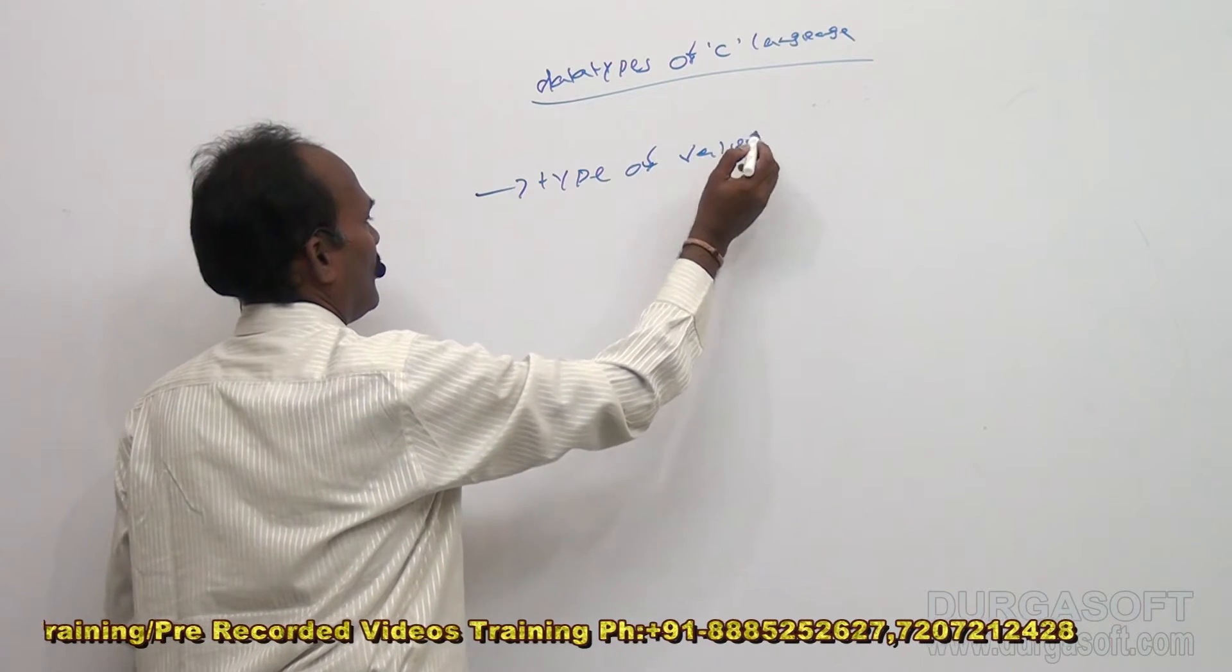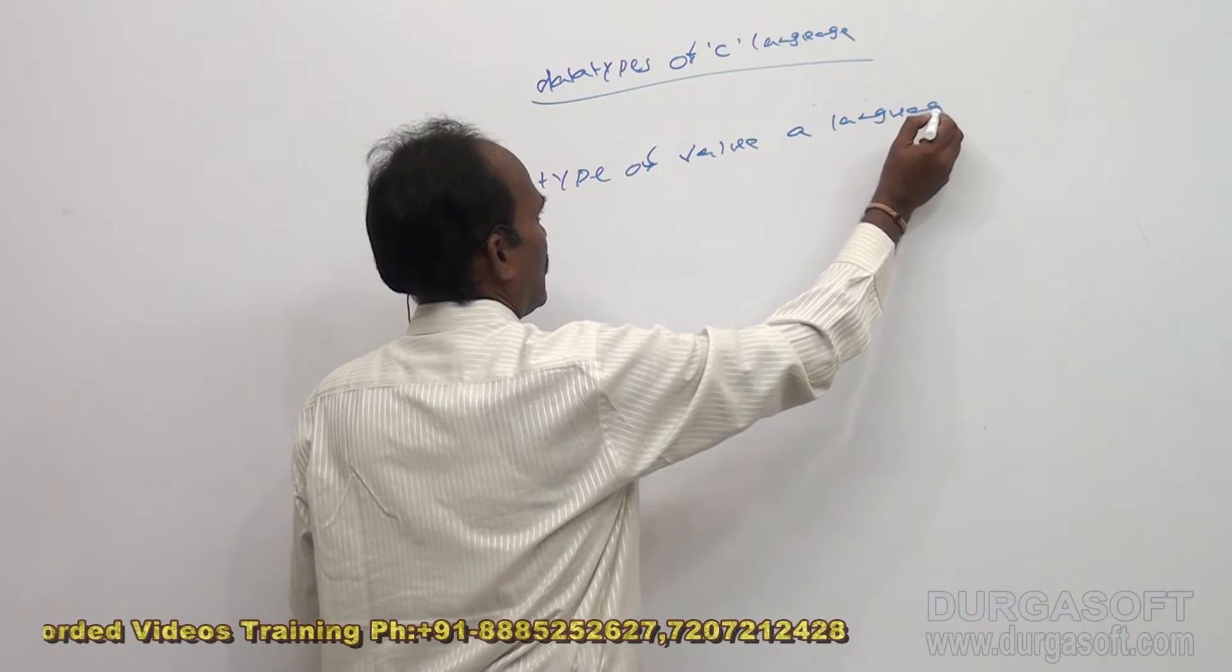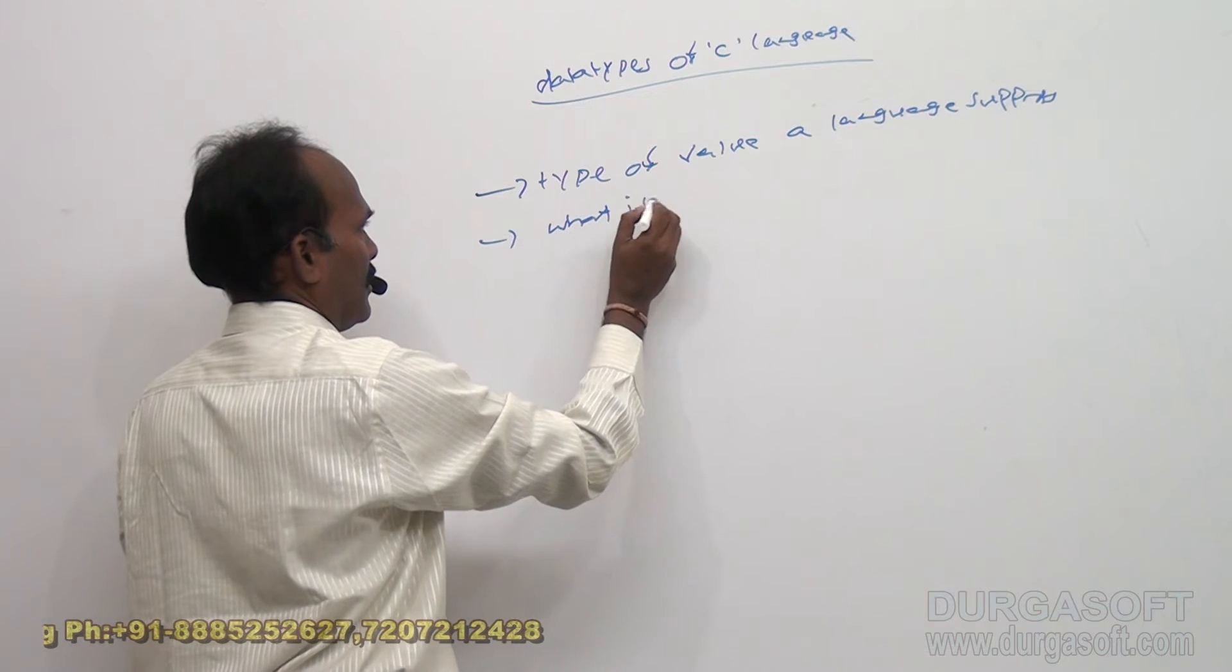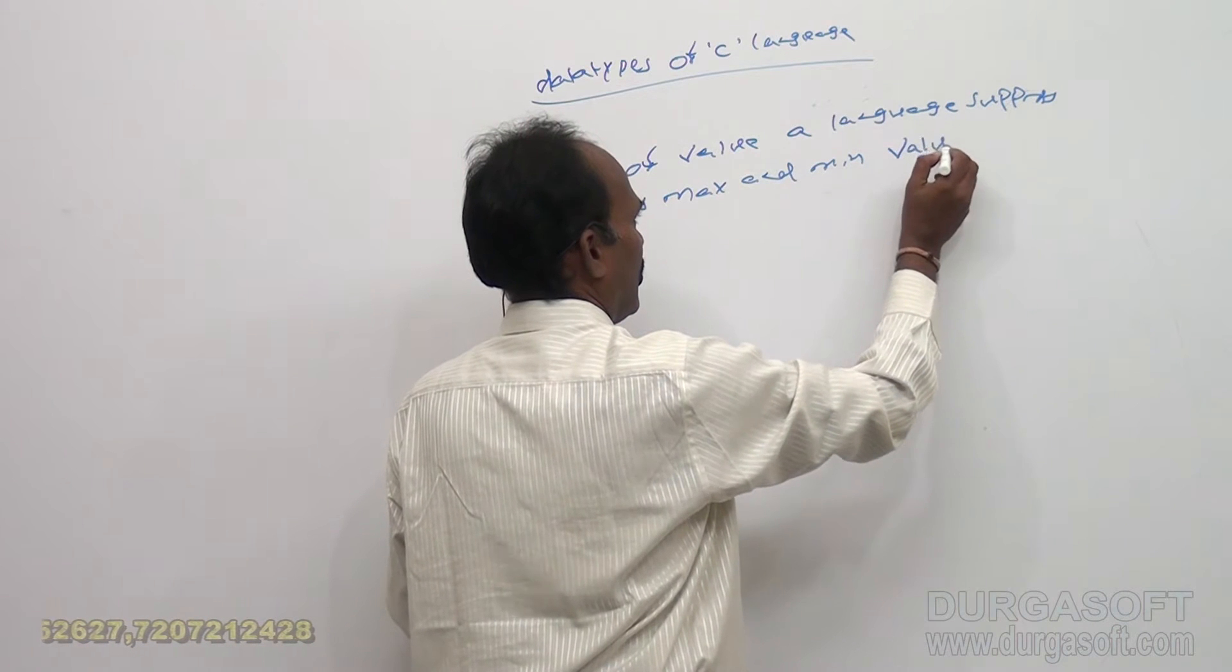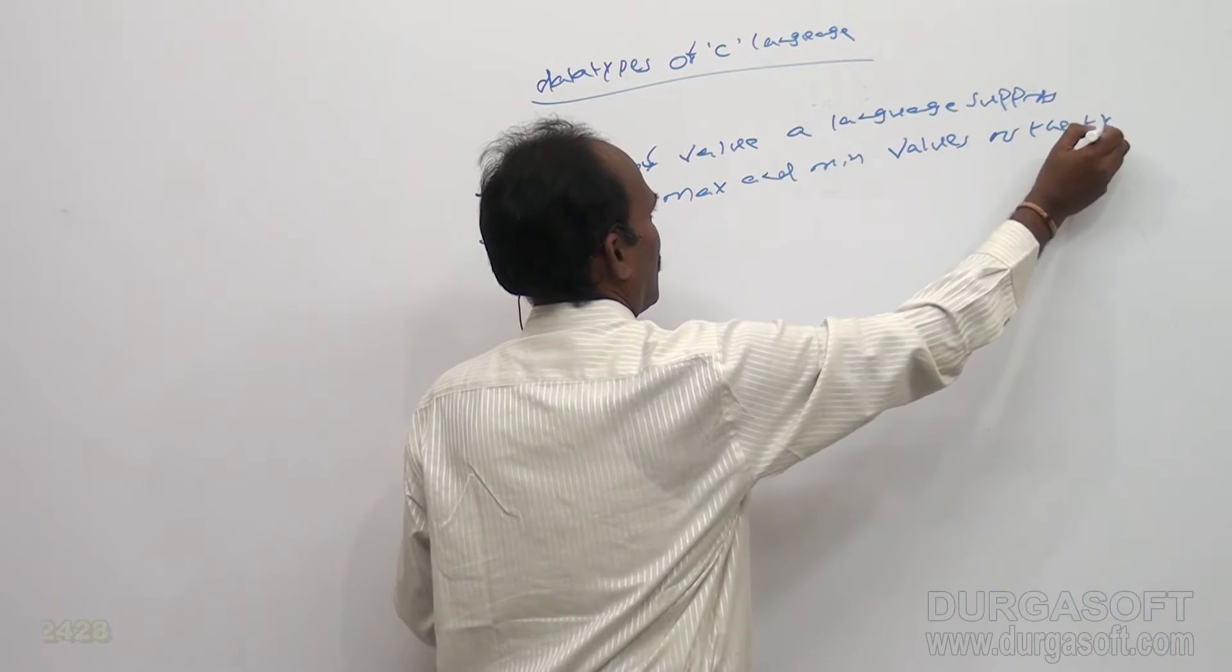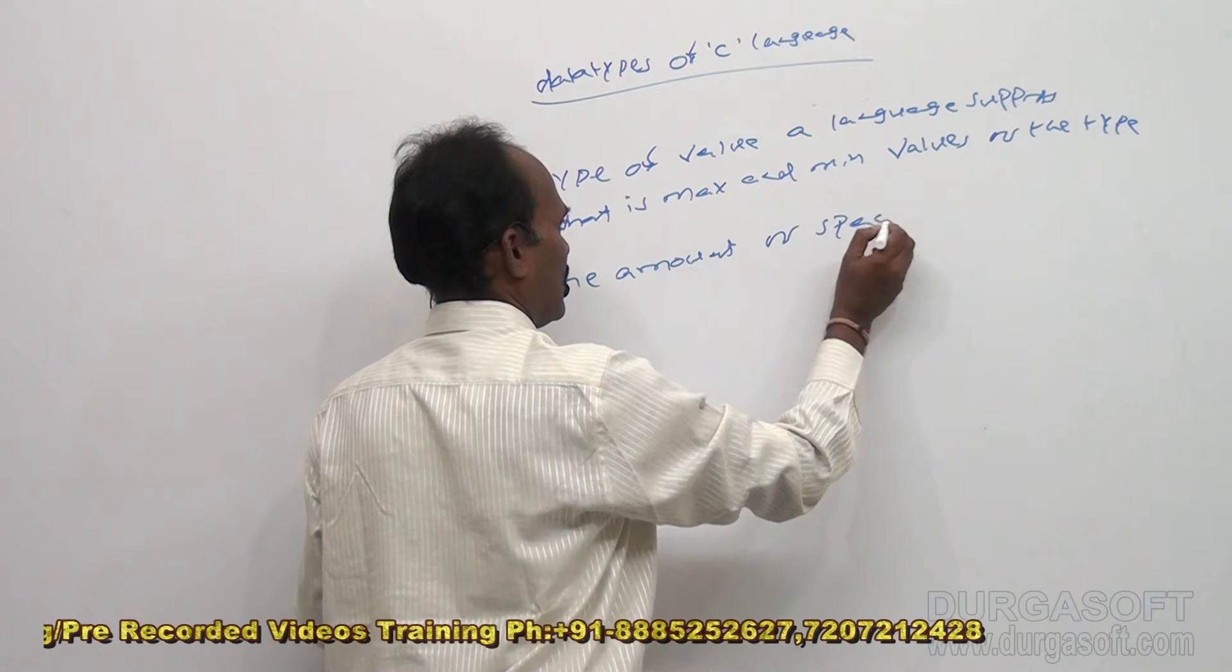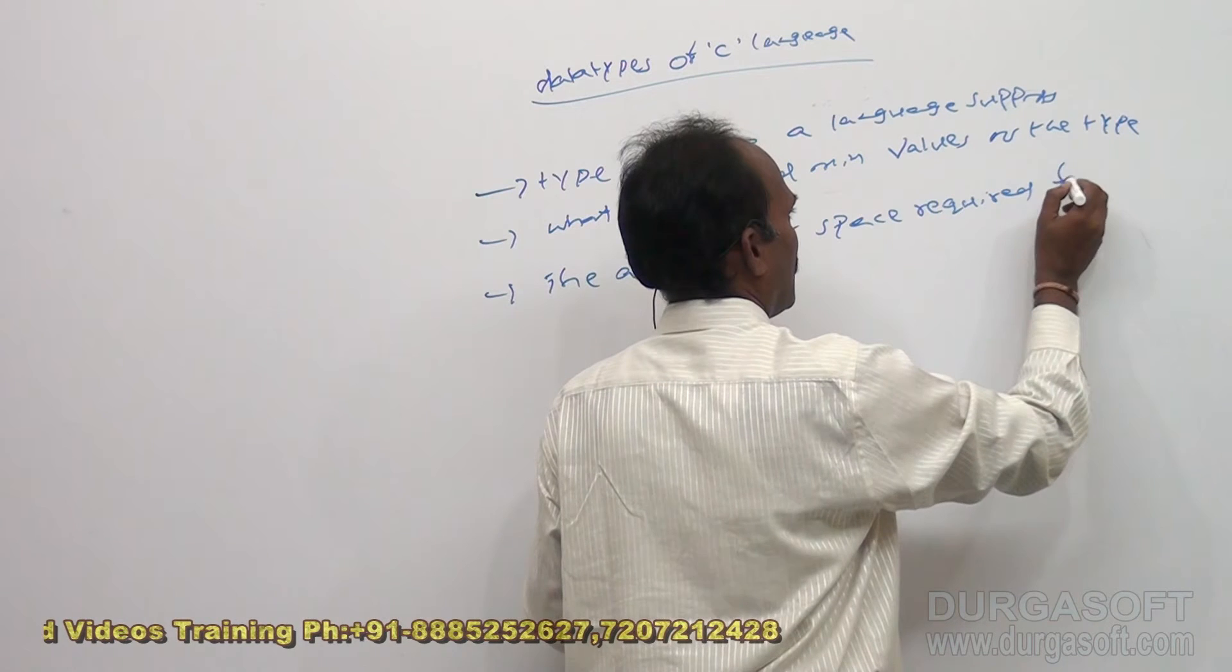Supports. Second one, what is the max and min values. Max and min values of the type. Next one, the amount of space, the amount of space required, the amount of space required for the type.